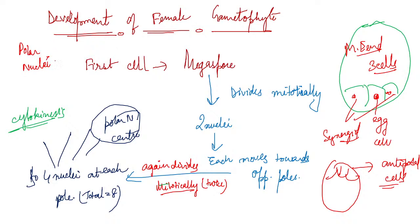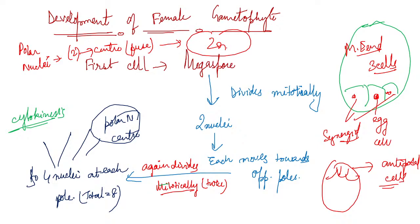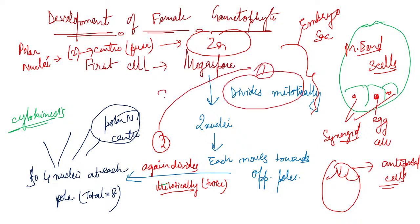Three types of pollination: first is autogamy, then geitonogamy, and another is xenogamy. Gametes means marriage. What is autogamy? Autogamy means self-pollination. Geitonogamy means pollination between two flowers of the same plant. Xenogamy is cross-pollination. Geitonogamy is genetically termed as self-pollination. The difference: pollen grains from the anther to the stigma of the same flower is autogamy. Pollination between two flowers of the same plant is geitonogamy. Xenogamy means pollen from one plant to a different plant.